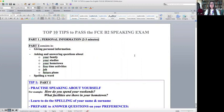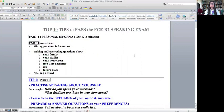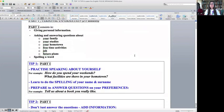So what does part one consist in? Part one gives you personal information for about two to three minutes. The examiner will ask you personal things such as questions about your family, your studies, your hometown, your free time activities, your job, future plans, and you'll be asked to do the spelling of a word, usually your surname.